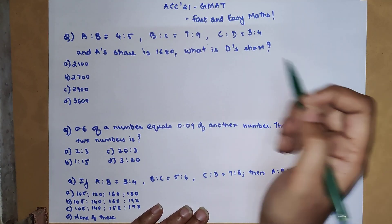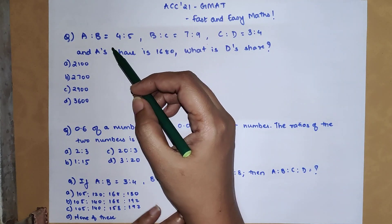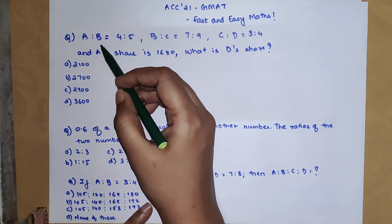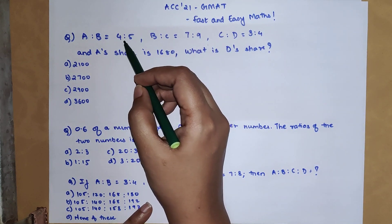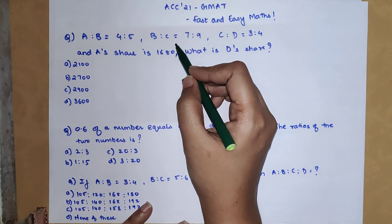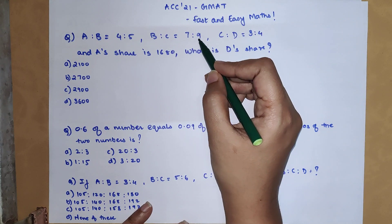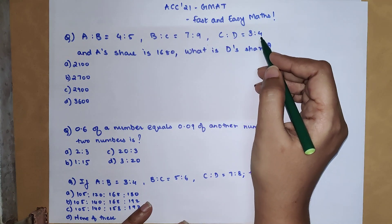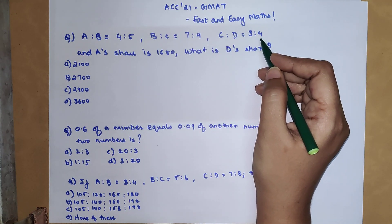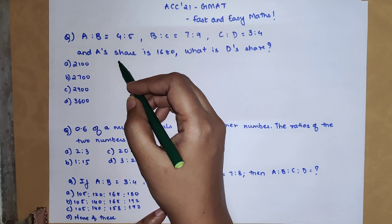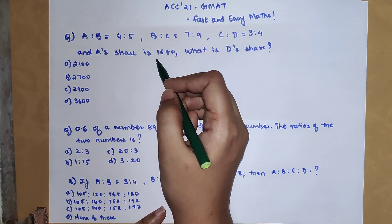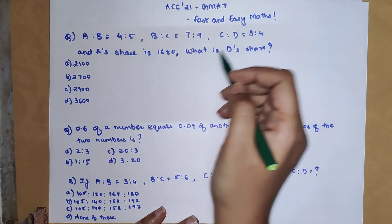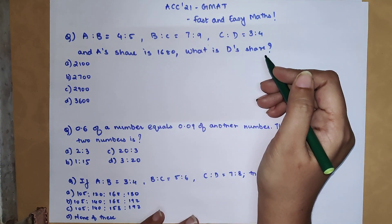The first question we have is: if A is to B equals 4 is to 5, B is to C equals 7 is to 9, and C is to D equals 3 is to 4, and we know that A's share is 1680, then what is D's share?